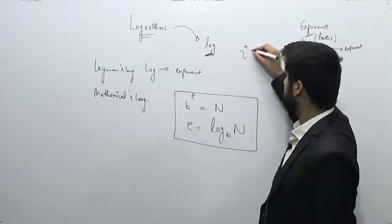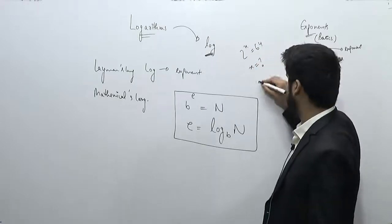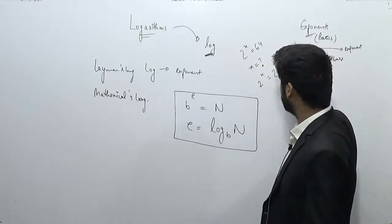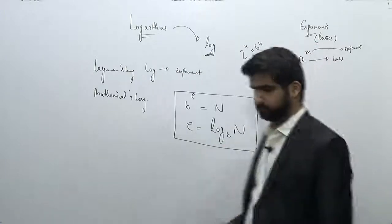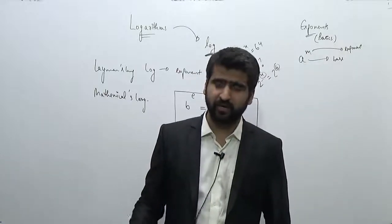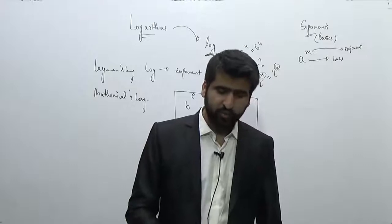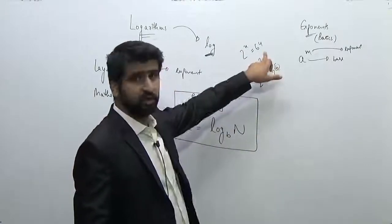2 to the power x is equal to 64. You know that the value of x can be easily determined. Like this can be written as 2 to the power x is equal to 2 to the power 6, so the value of x is equal to 6. So this is a very usual power. This can be easily determined logically or mathematically.